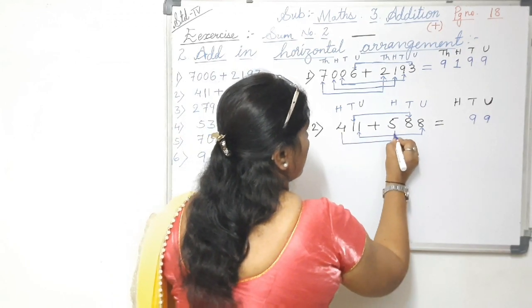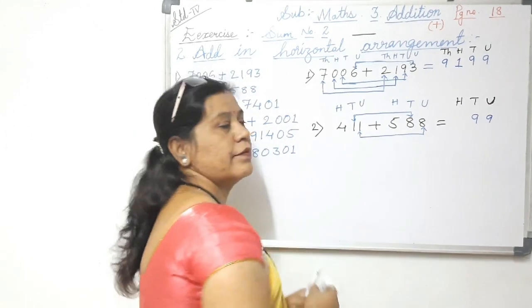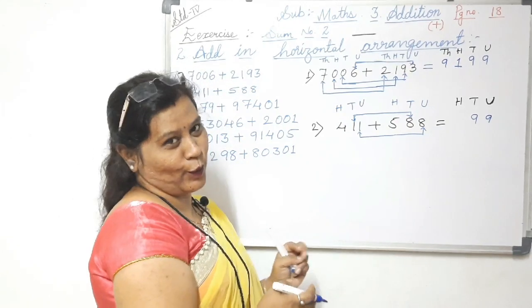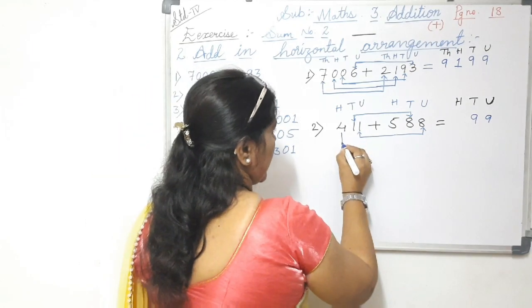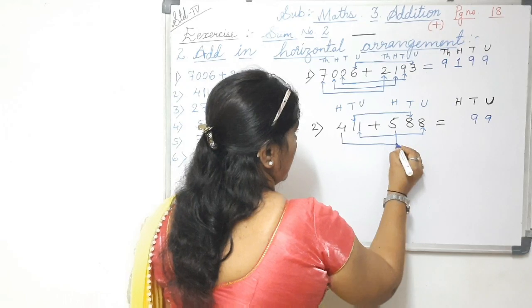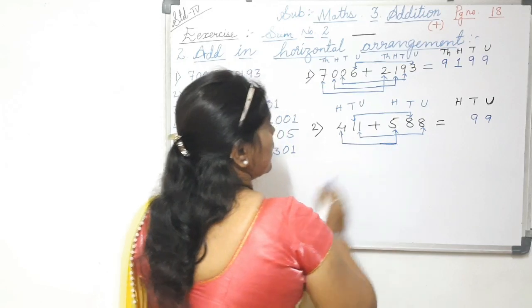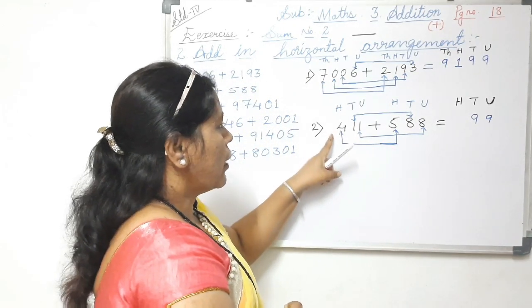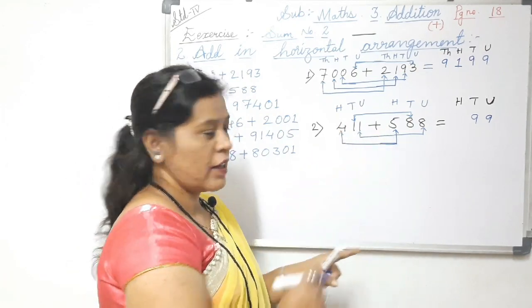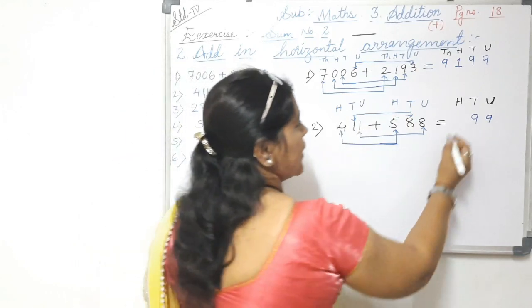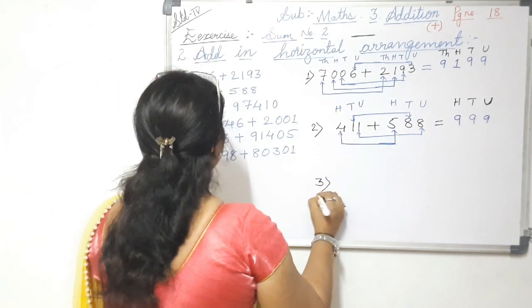Hundreds plus hundreds: draw the arrows and add. The hundreds digit of the first number is four and of the second is five, so four plus five equals nine. The total of four hundred and eleven plus five hundred and eighty-eight is nine hundred and ninety-nine.